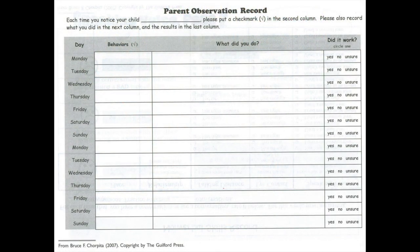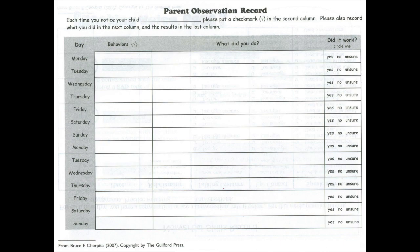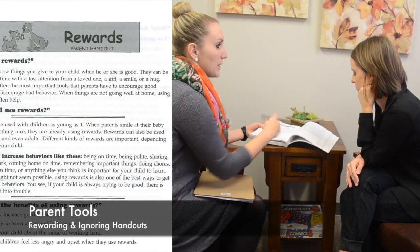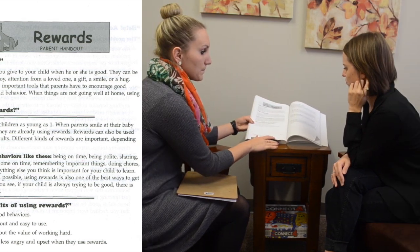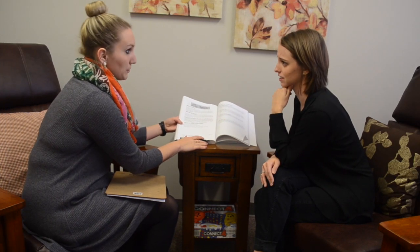The psychologist explains that the mother's involvement is needed both inside and outside of sessions. They will schedule sessions together without Lydia to discuss techniques such as rewarding and ignoring unwanted behaviors at home. The mother will also be given a parent observation record to mark Lydia's behaviors and her own responses, as well as handouts on rewarding and ignoring. Role-playing between the clinician and the mother will help her practice these skills to use with Lydia at home.